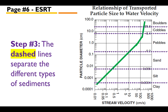Notice that the dashed horizontal lines in this graph represent the separation of the different sediment types — clay, silt, sand, pebbles, cobbles, and boulders are all separated by the dashed lines. Not the solid lines; the dashed lines are what separate them.